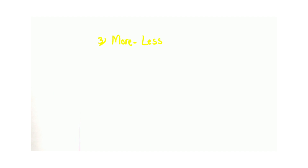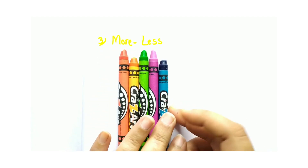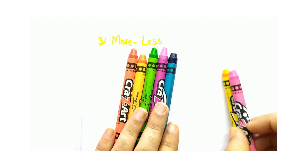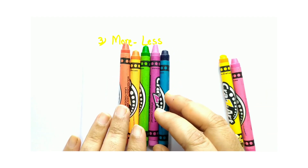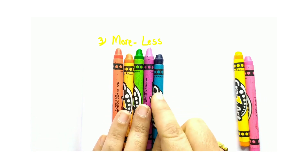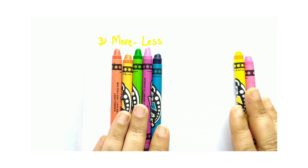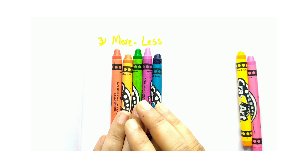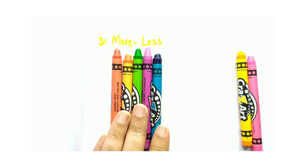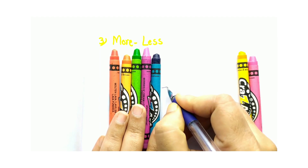The next concept is more and less. Here I am taking 5 crayons, and on this side I am taking only 2 crayons. So which is more? This side is more — here we have 5 and this side we have only 2. So the more the quantity, that number shows the bigger number. The less the quantity, that is the smaller number. Here this side we have 5.